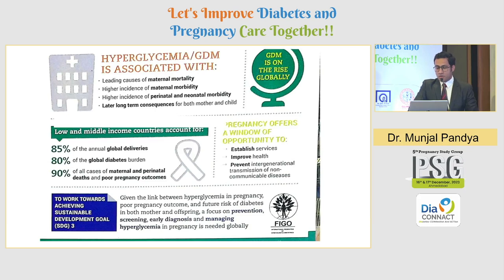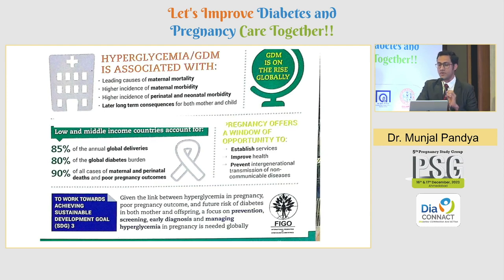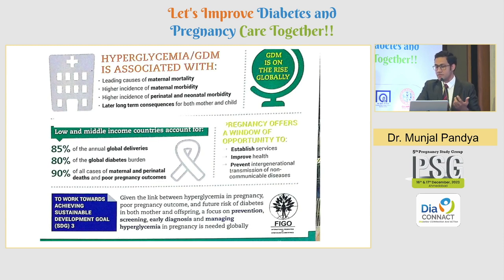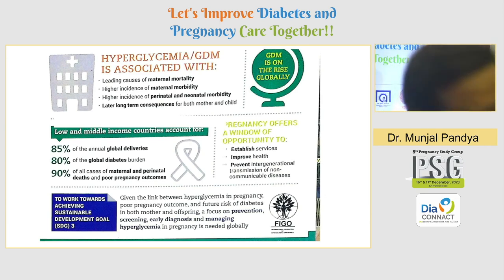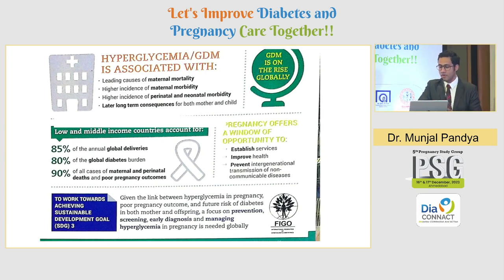When it comes to FIGO, it has a strong stand because low and middle income countries account for 85% of global deliveries, 80% of global diabetes burden, and 90% of all maternal and perinatal morbidity and mortality. That is why we need to focus on low and middle income countries — we need to increase education as well as implementation of what we have been discussing. The impact on the general population is the true reflective indicator of where we are heading.